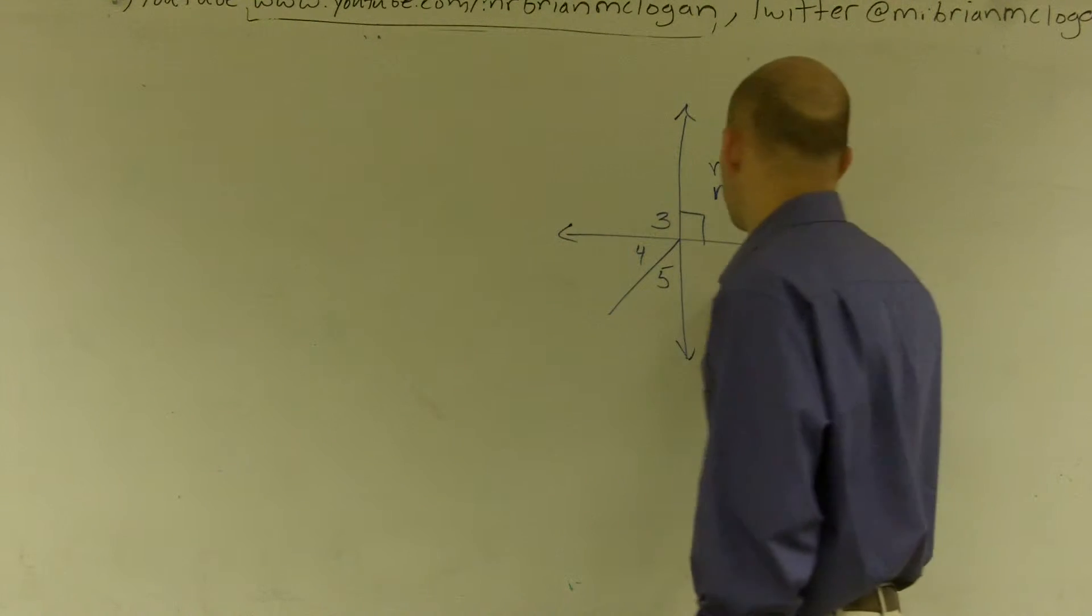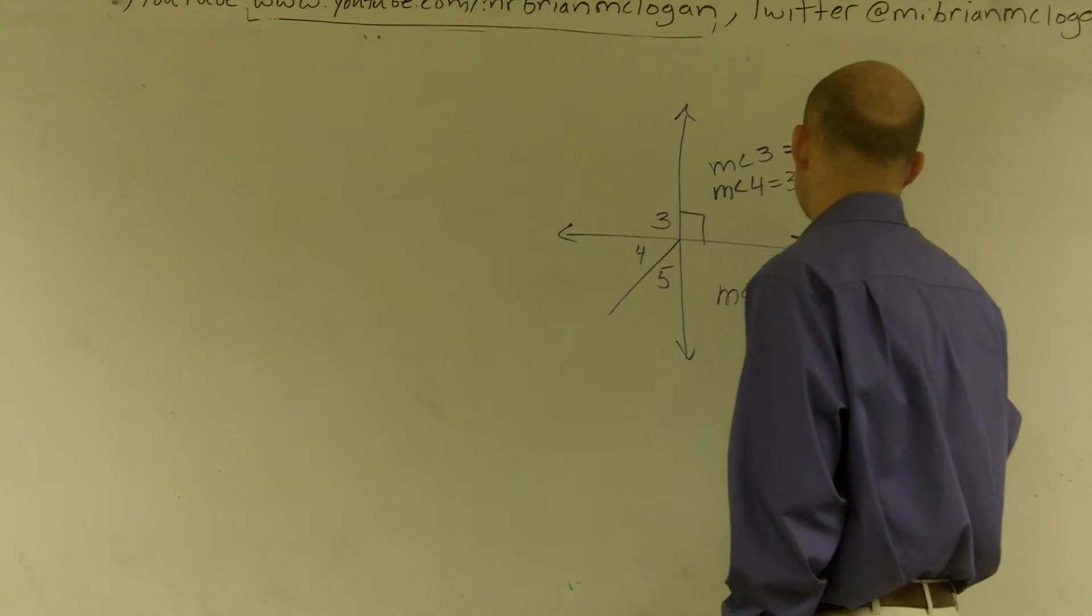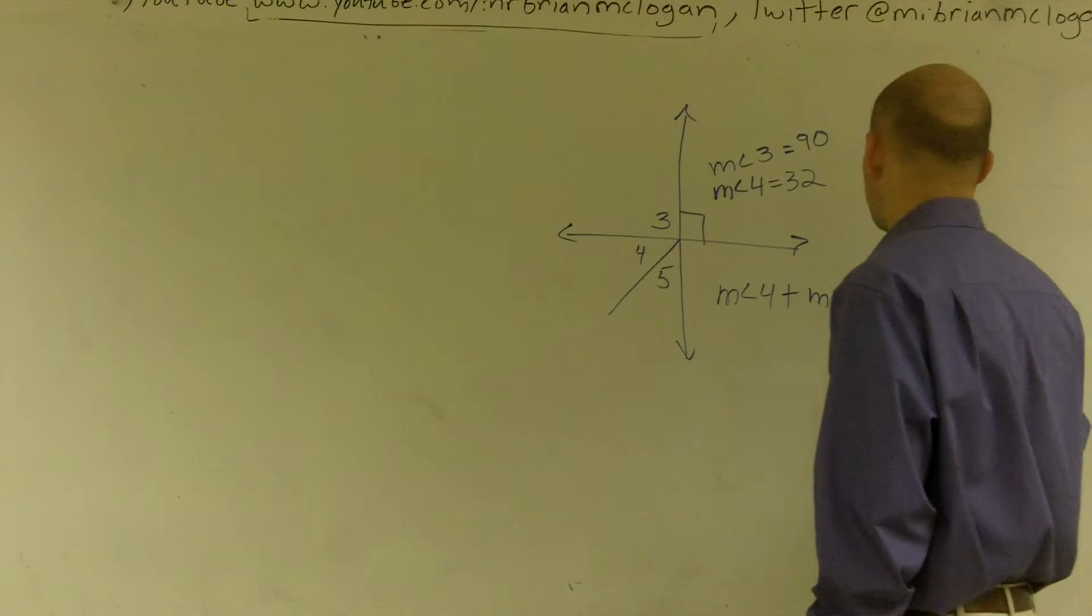So here, I can say that measure of angle 4 plus measure of angle 5 equals 90 degrees.